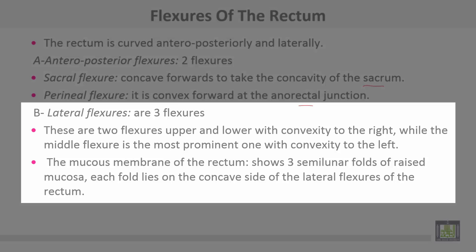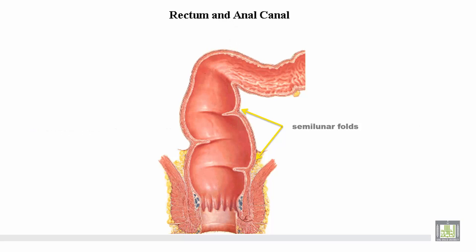The lateral flexures are three. The upper and lower flexures have convexity to the right, while the middle flexure is the most prominent one with convexity to the left. The mucous membrane of the rectum shows three semilunar folds of raised mucosa. Each fold lies on the concave side of the lateral flexures of the rectum. Here are the flexures and the three semilunar folds of the rectum.